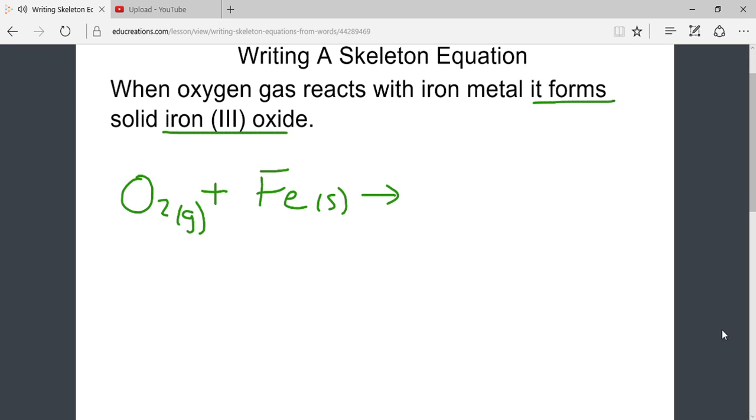Our product is known as iron three oxide. This is an ionic compound. Therefore, we will need ion charges to write its formula. Iron Roman numeral three indicates iron with the 3+ charge. If you recall, iron could also form a 2+ charge. That would then be called iron two and not iron three. Oxide always carries a 2- charge.